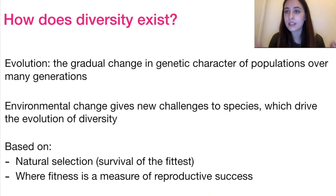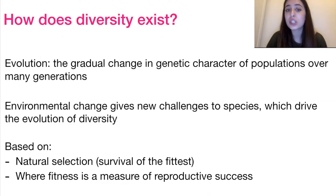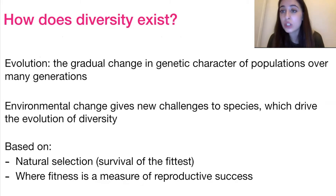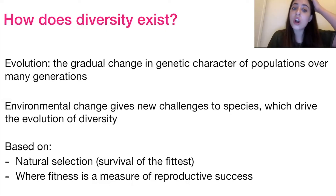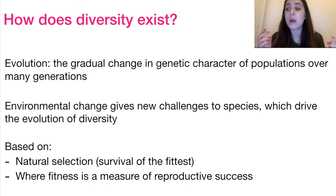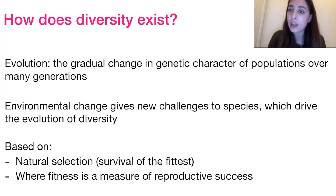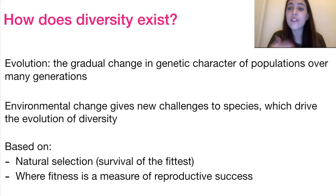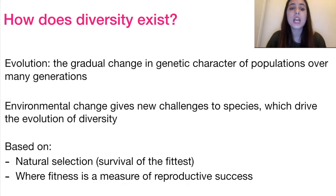How does diversity exist? Evolution. Evolution is the gradual change in the genetic character of a species through many generations, and it is based on natural selection — the fact that there is variation in a species. According to the environmental demands at a certain time, some organisms will be better able to survive, reproduce, and pass on their genes than others. Fitness in this case is a measure of reproductive success.